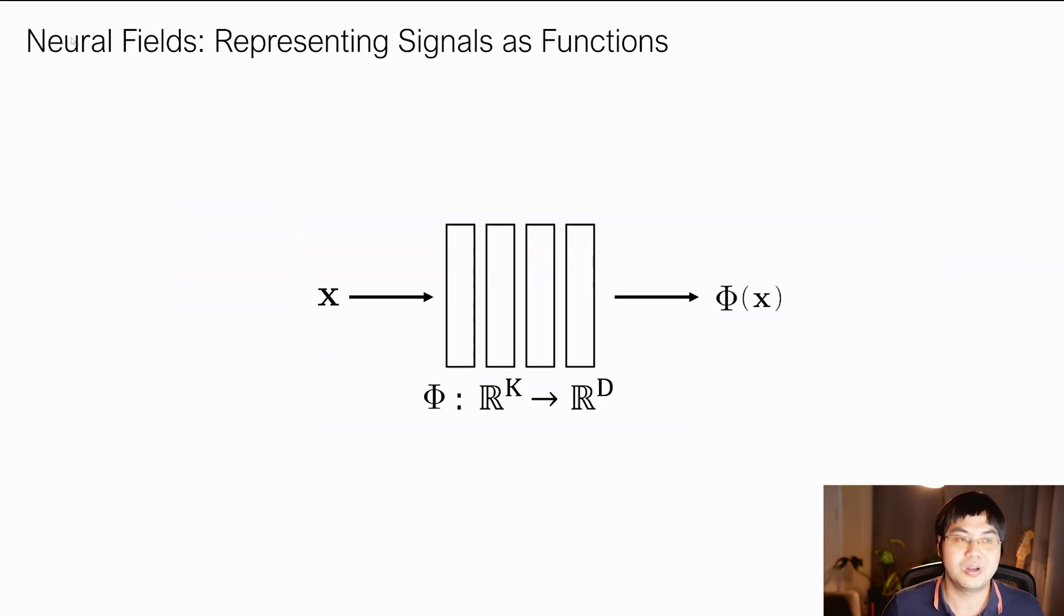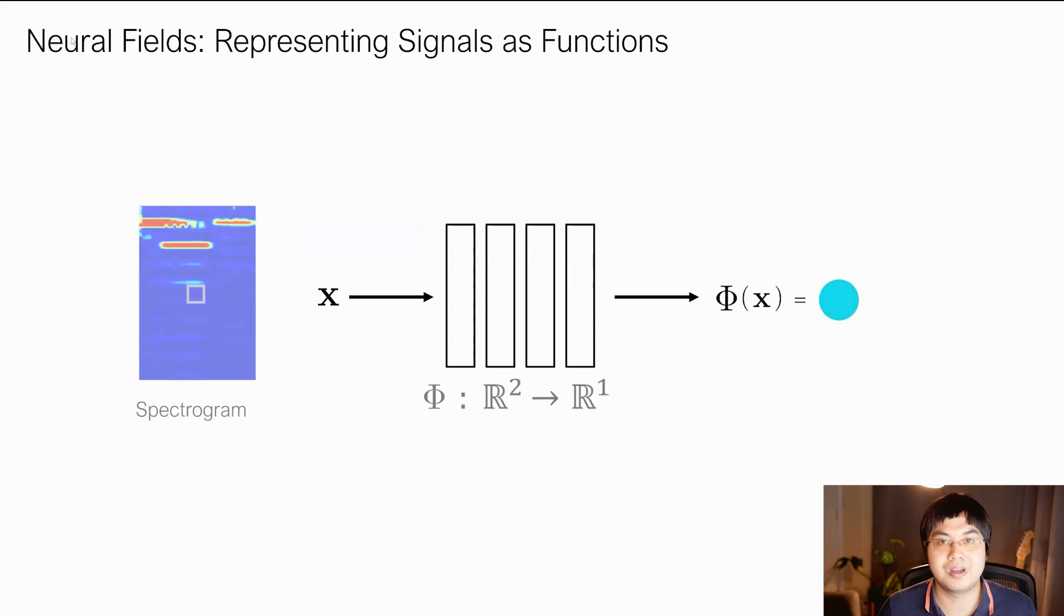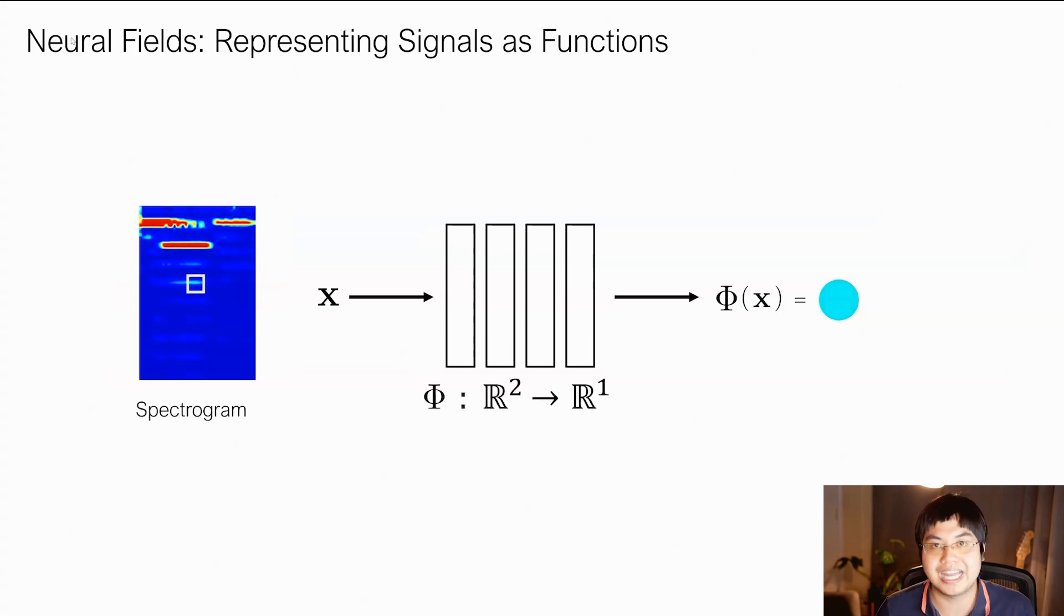To do this, we utilize a neural field. A neural field takes its coordinates of a signal and outputs the corresponding values at those coordinates. This gives us a powerful way to represent a variety of different signals. Take, for example, an image here. We can represent an image by mapping each of the pixel values in the image to its corresponding color.